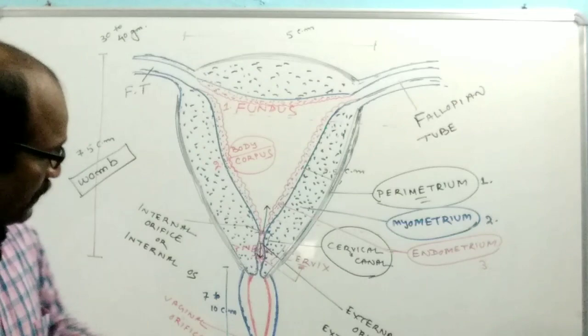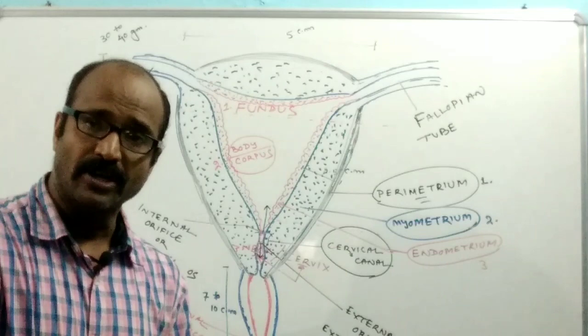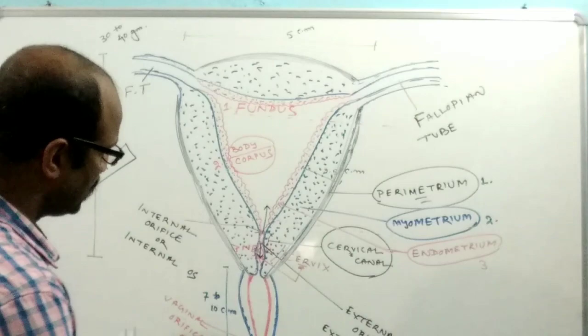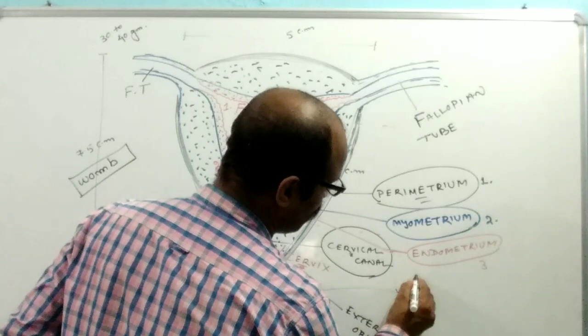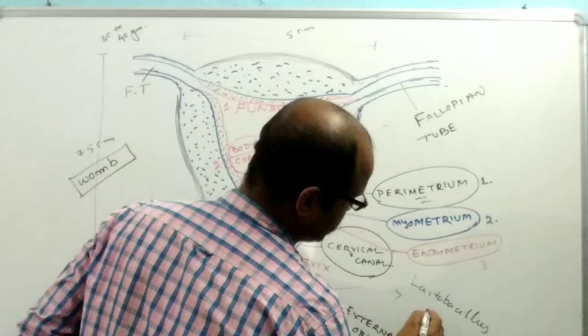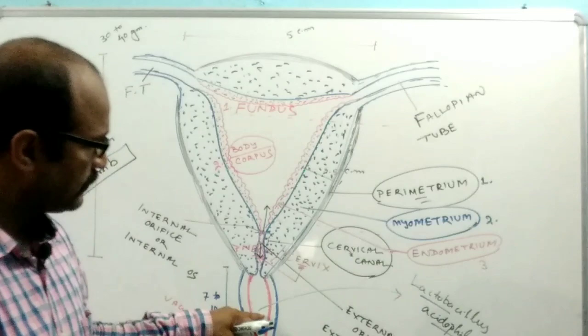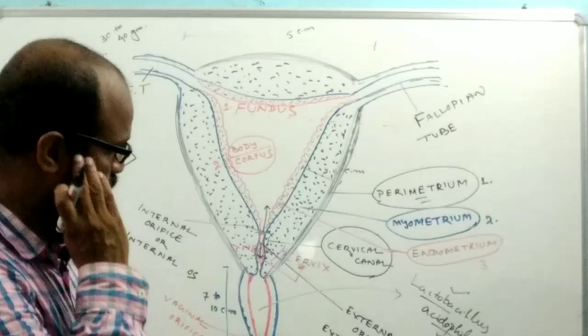The wall of the vagina during the reproductive life of women may contain bacteria known as Lactobacillus acidophilus, which produces lactic acid from glycogen.